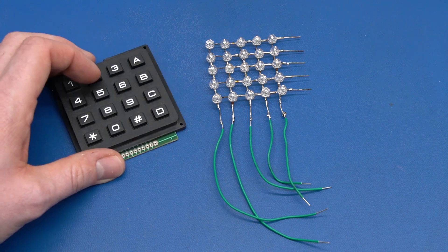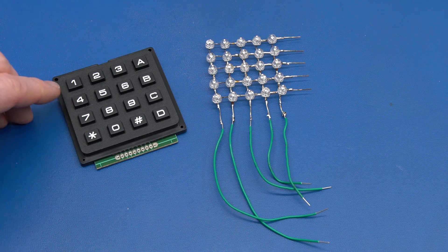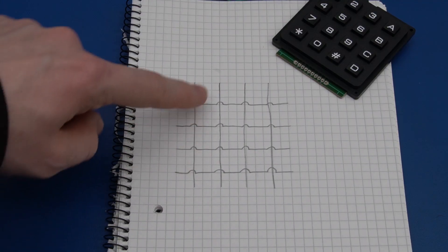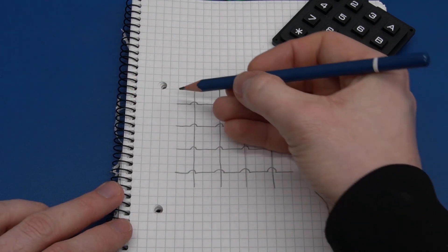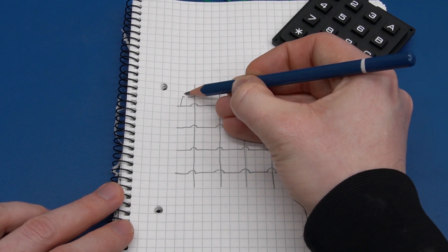If we are making it active high, you could make it active low, it's your choice. So drawing it as a schematic, we have a grid like this and our switches are here in between.